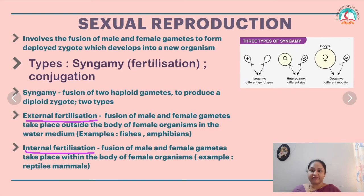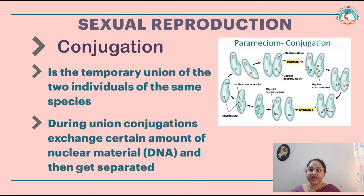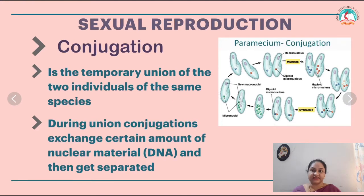The kinds of syngamy are autogamy, exogamy, hologamy, pedogamy, merogamy, isogamy, and anisogamy. We then move on to conjugation, which is the temporary union of two individuals of the same species. During the union, conjugates exchange a certain amount of nuclear material — the DNA — and then get separated. Examples are paramecium and bacteria.